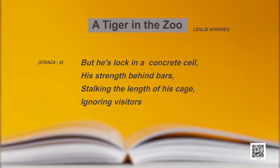Now the fourth stanza: 'He is locked in a concrete cell, his strength behind bars, stalking the length of his cage, ignoring visitors.' He is in the zoo, locked in a concrete cell everywhere, behind the bars. He is stalking the length of his cage because there is not a lot of space to move around. He is ignoring people — he does not want to see humans.